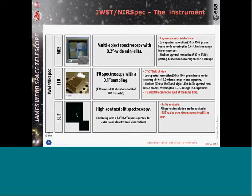The second mode moves to 3D: the IFU, the integral field unit — 3D spectroscopy with a sampling of 0.1 arcseconds (100 milli-arcseconds). We slice the field of view and spread the slices to disperse the light. We have 30 slices of 30 pixels, so 900 spaxels, each covering 0.1 by 0.1 arcseconds on the sky. The field of view is 3 arcseconds by 3 arcseconds — not that big, but with very good sampling. The IFU can also use a high spectral resolution mode at R≈2700. However, the IFU and the MOS cannot be used at the same time because they compete for detector real estate.